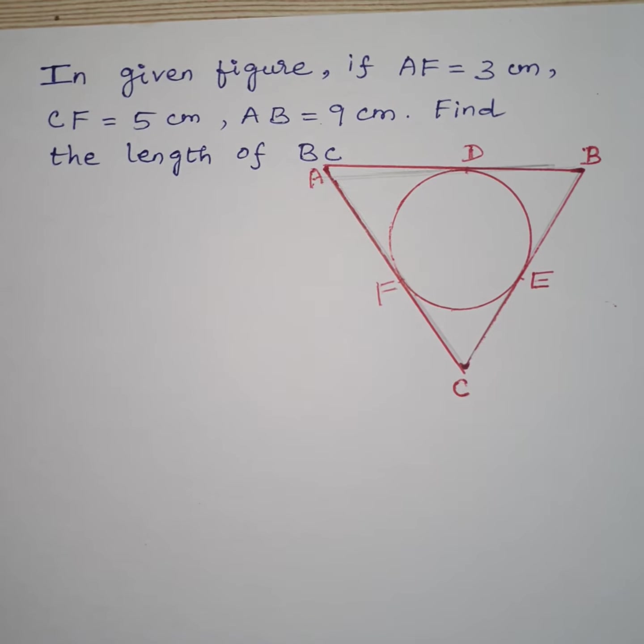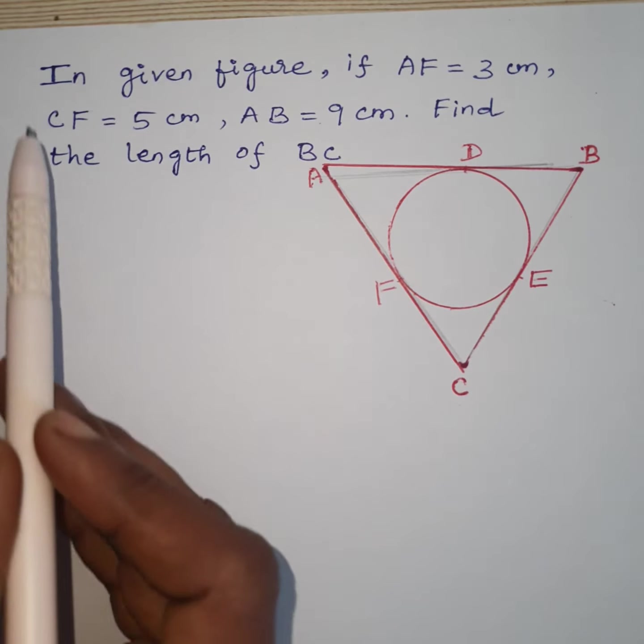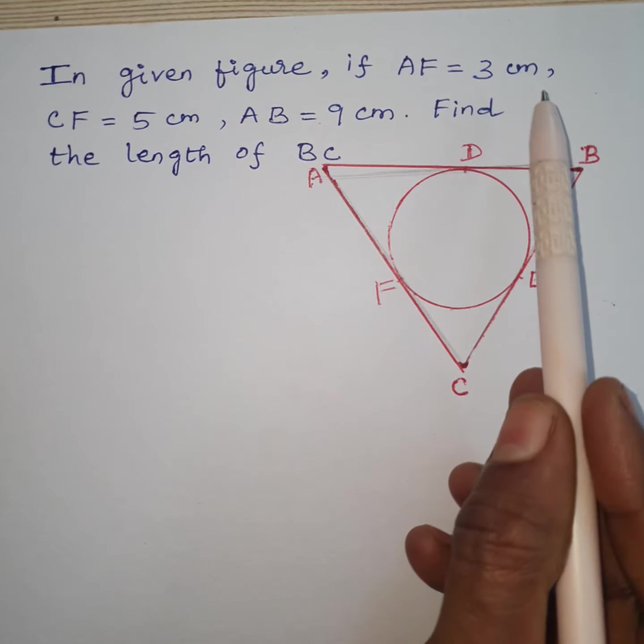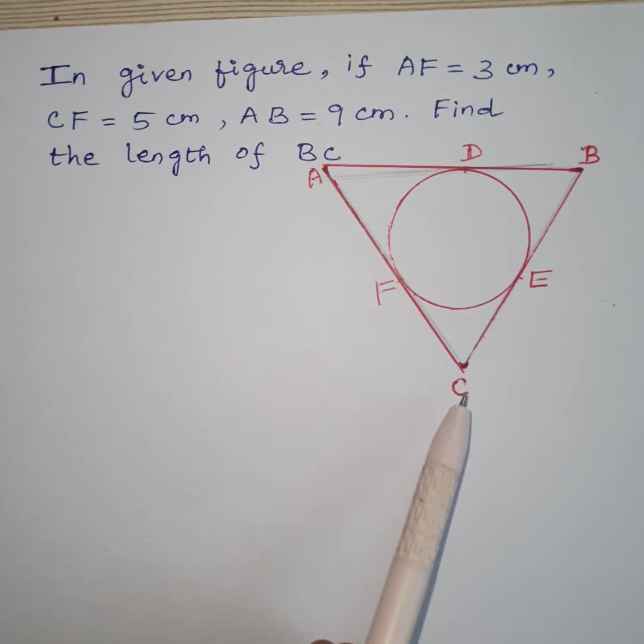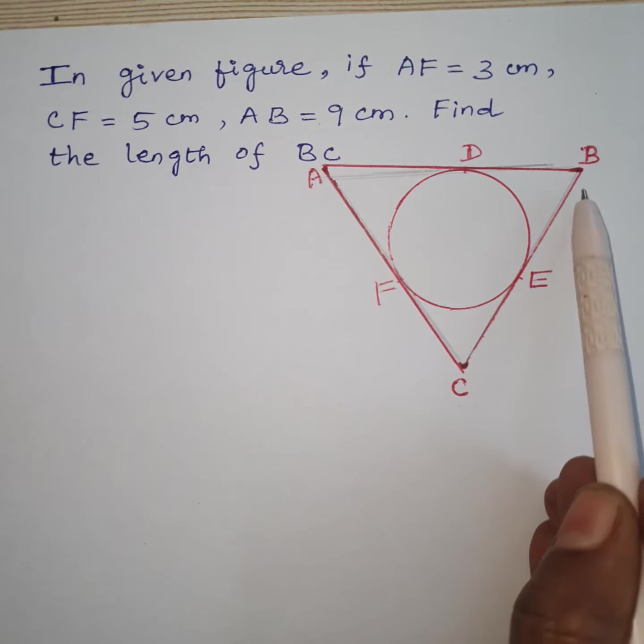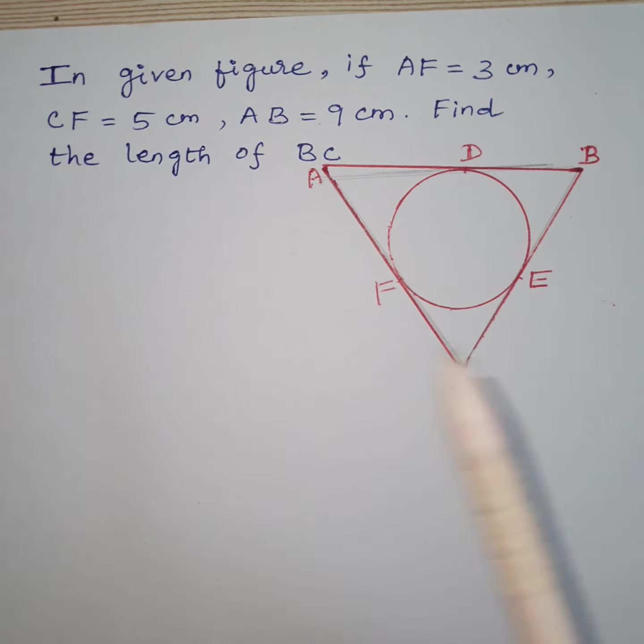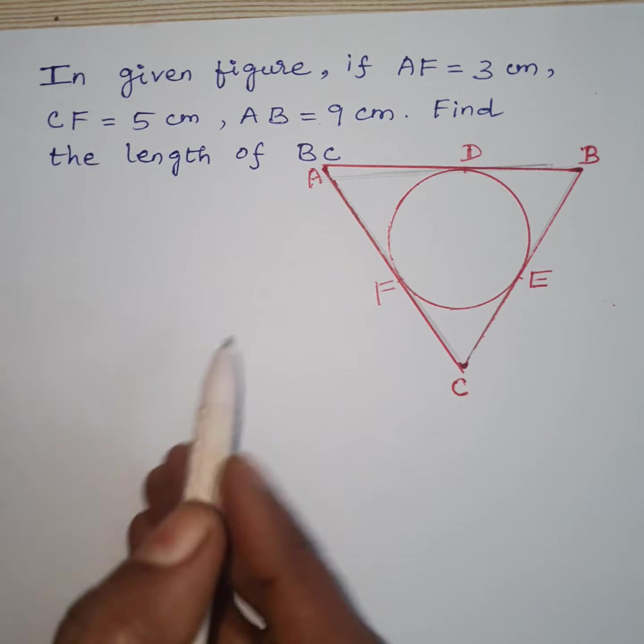Hello viewers, welcome back to my YouTube channel. This video will explain the given problem. In the given figure, if AF equals 3 cm, CF equals 5 cm, AB equals 9 cm, find the length of BC. We have to find the length of BC.